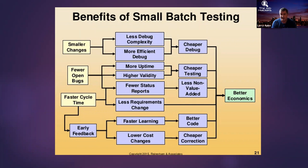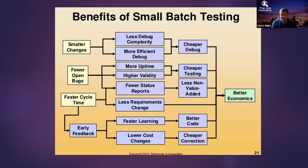In most cases, it's very hard to fool ourselves into believing we're optimal using waterfall for complex work because it's so apparent. Faster cycle time means we get a lot of fast, actionable, accurate feedback. It means lower cost of change and faster learning. In knowledge work, what you're selling is your ability to think and have knowledge. All of this leads to simply better economics.